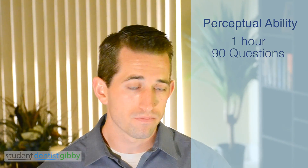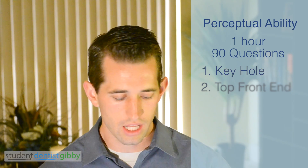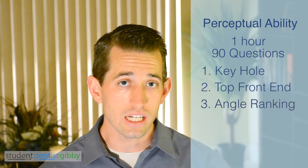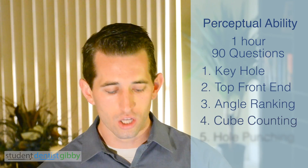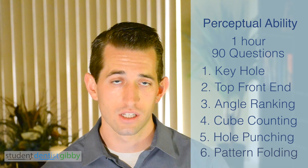The next section is Perceptual Ability. You have one hour for 90 questions. The different things you're tested on in perceptual ability — there are six things: keyhole punch, top front end, angle ranking, cube counting, hole punch, and pattern folding. You're going to want to get practice in each one of those — that's what's tested on the PAT, the perceptual ability part.